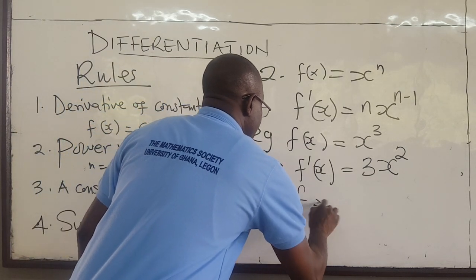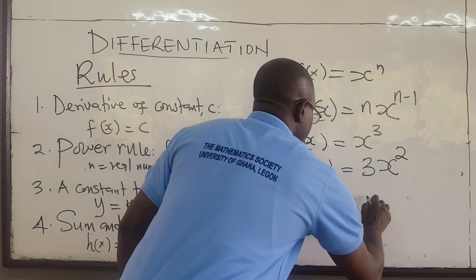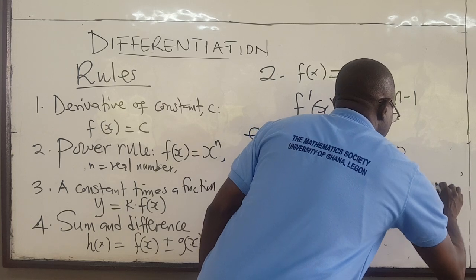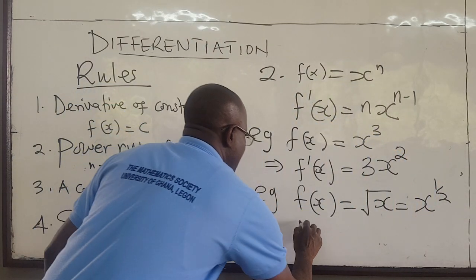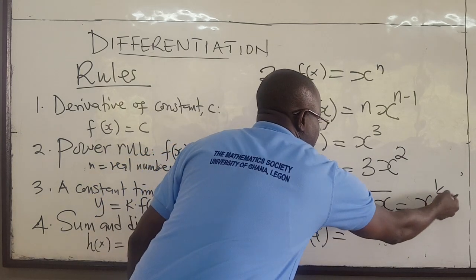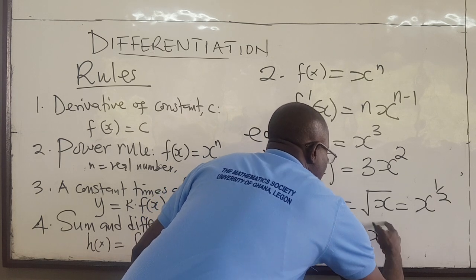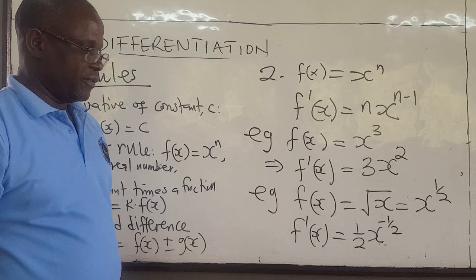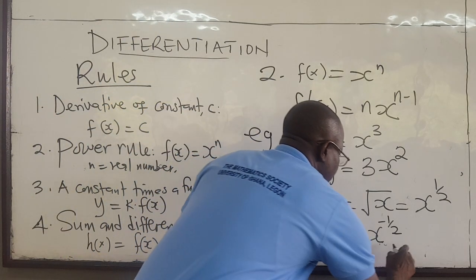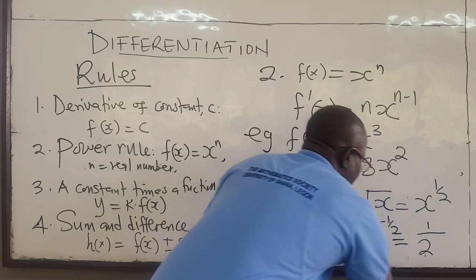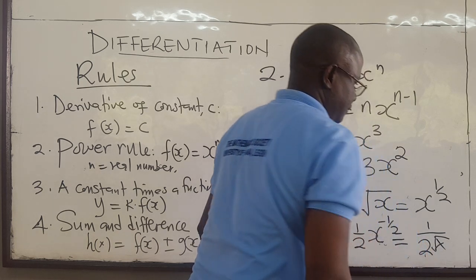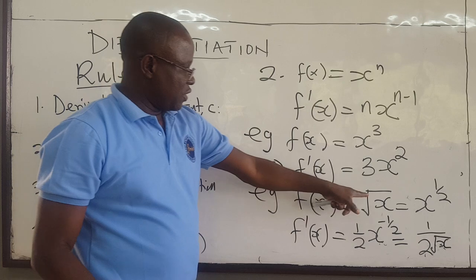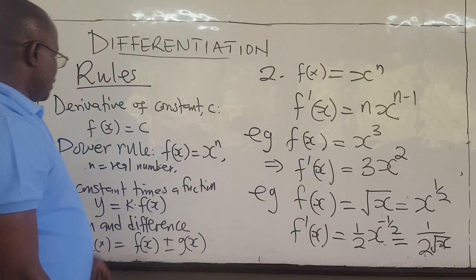Another example: if f of x equals the square root of x. Remember that the square root of x is x raised to the power one-half. So f prime of x equals one-half times x raised to the power one-half minus 1, which is negative one-half. You can write this in a nicer form: this is the same as 1 over 2 times x to the power one-half, or 1 over 2 root x. That is the derivative of the square root of x using the power rule.